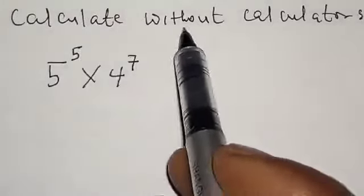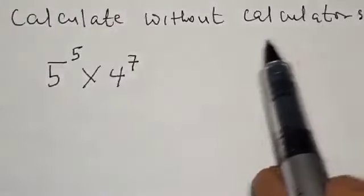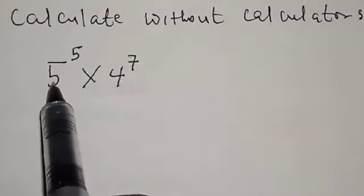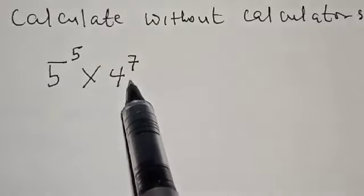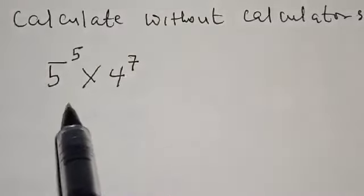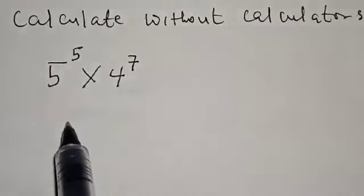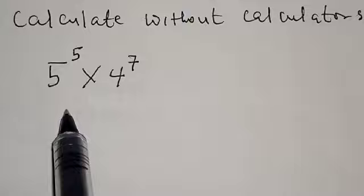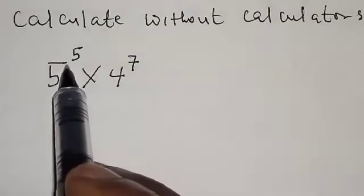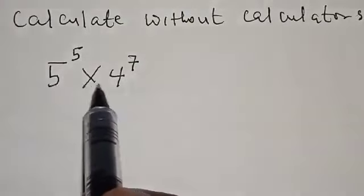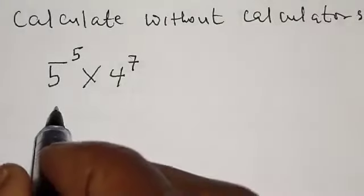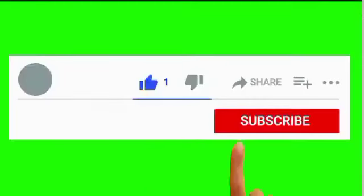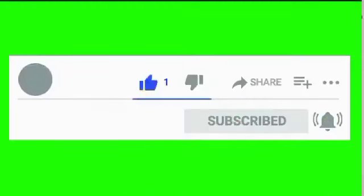Calculate without calculators: 5 raised to power 5 multiplied by 4 raised to power 7. Hi everyone, welcome to my class. In this class we want to look at how we can calculate 5 raised to power 5 multiplied by 4 raised to power 7 without using a calculator. But before we proceed, please don't forget to like, share, comment and subscribe.